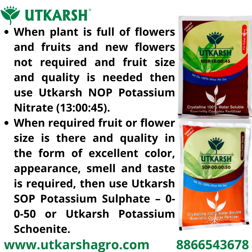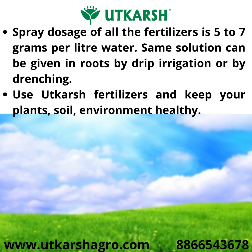When the required fruit or flower size is there and quality in the form of excellent color, appearance, smell and taste is required, then use Utkarsh SOP Potassium Sulphate 0-0-50 or Utkarsh Potassium Schoenite. Spray dosage of all fertilizers is 5-7 grams per liter of water. The same solution can be given to roots by drip irrigation or by drenching.